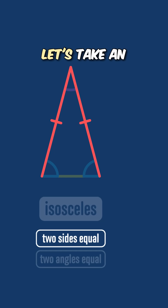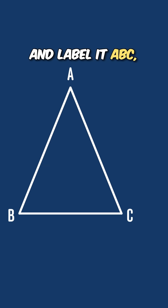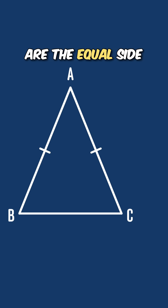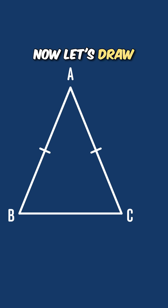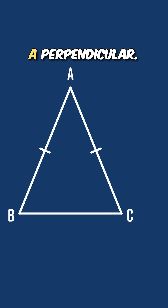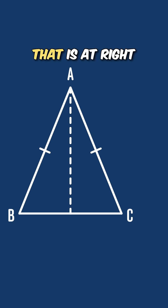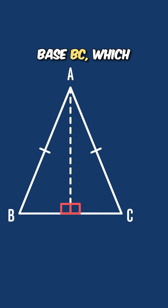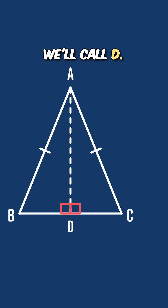Let's take an isosceles triangle and label it ABC, where AB and AC are the equal side lengths. Now let's draw a line from the vertex at A perpendicular — i.e. at right angles — to the base BC, which will meet the base at a point we'll call D.